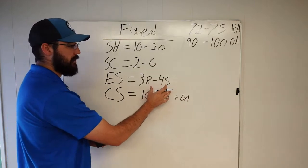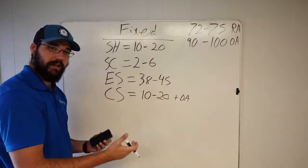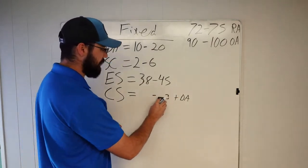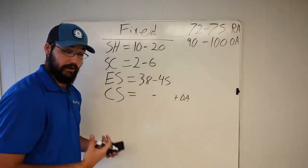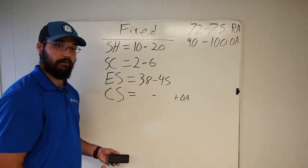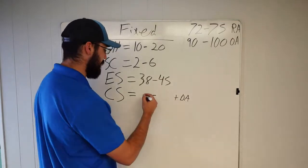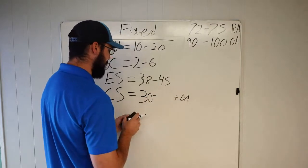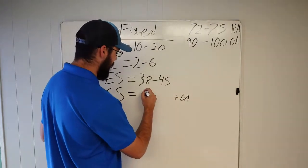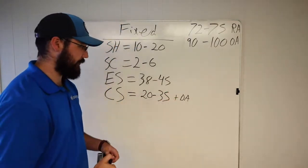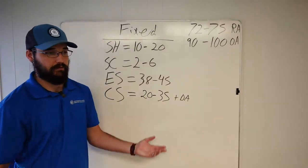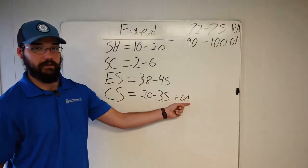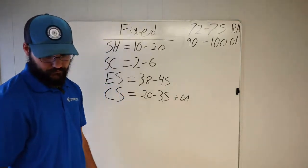Evaporator saturation on a fixed bore I'd expect to be about the same, maybe a little lower — fixed bore typically shoots toward the lower side in my experience. For condenser saturation on a fixed bore — we're talking about an older system at this stage, since everything new that's come in has been TXV, especially on the commercial side. If I see a fixed bore, I'm automatically thinking probably 20 to 35 degrees above ambient. If I see 40, I'm going to start asking questions. It may be perfectly fine, but I'm still going to ask. Condenser saturation is above ambient specifically.